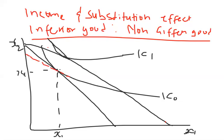The budget constraint shifts like this. So in this case the initial point is A, and as a result of the fall in price we move to point B. Because we are compensating by deducting part of the person's income, this new budget constraint cuts the original indifference curve at two points — that's point A and point C. So this new quantity is x1 new.